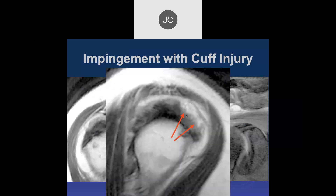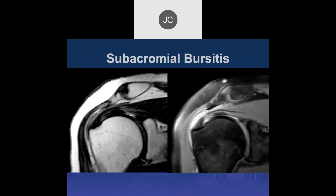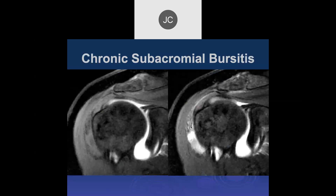Here we see irregularity of the superior surface of the supraspinatus tendon and bursal fluid collection with synovial thickening indicating bursitis. Another example: the cuff is intact with no full-thickness tear, some irregularity of the superior surface, a lot of irregularity of that inferior acromion, and a large fusion consistent with subacromial subdeltoid bursitis. Additional synovial thickening and irregularity can also accompany subacromial bursitis.